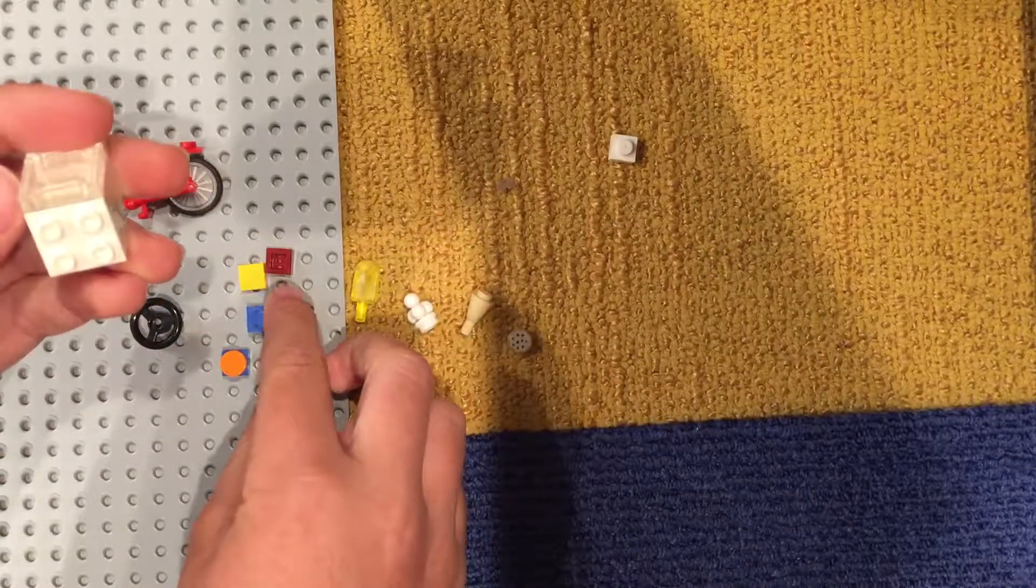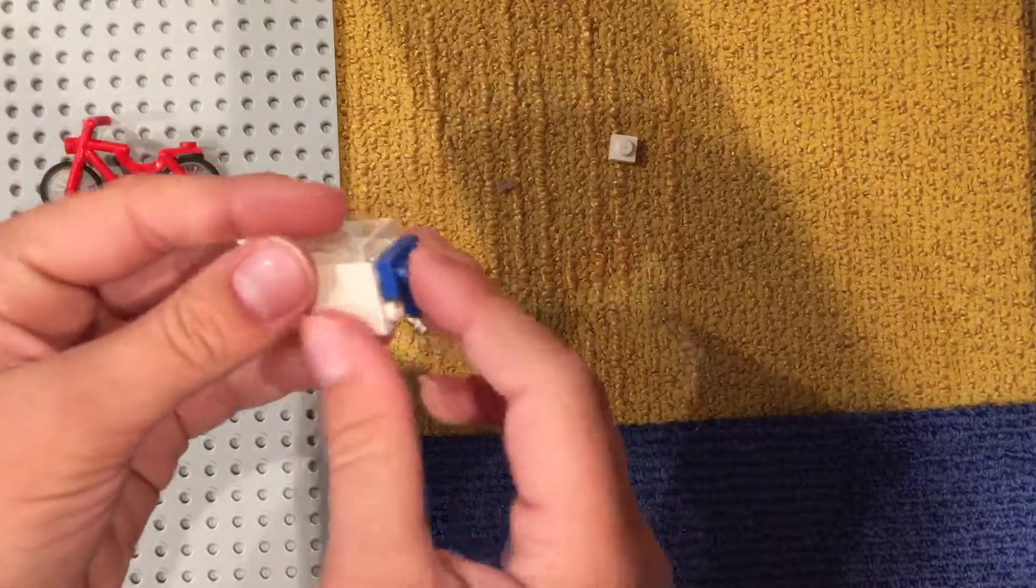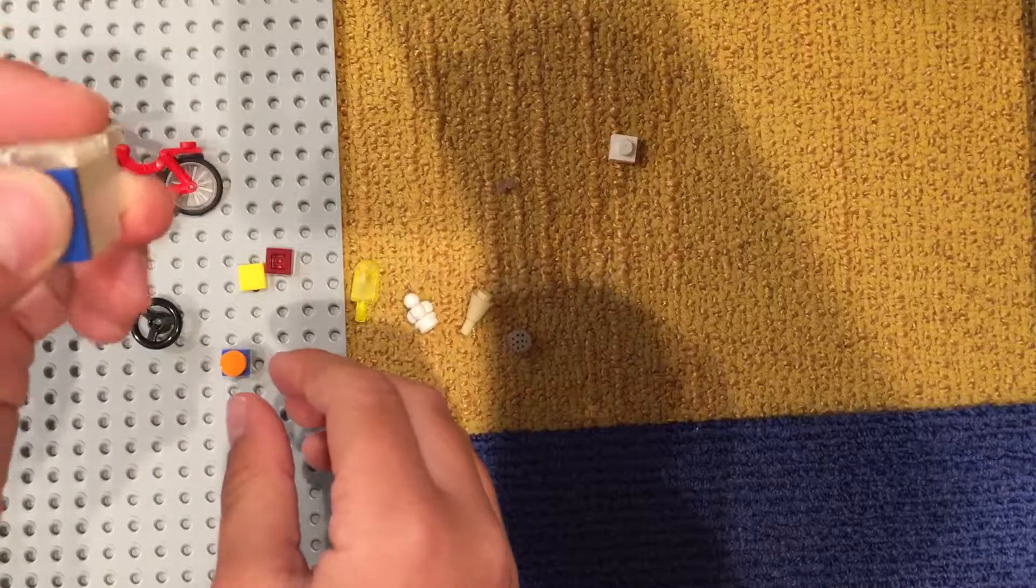And then what you do next is you grab whatever color you want, preferably like blue or red or something of one of these corner pieces and just snap it on there.